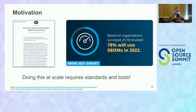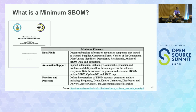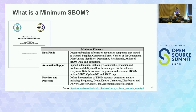The minimum SBOM: NTIA had a timeline and late last summer produced a document discussing the rationale. There were minimum elements, and the goal was to support automation of automatic generation and scaling. It recognized a couple of formats capable of doing the job: SPDX, CycloneDX, and SWID. And then there were some practices and processes including understanding the depth of your dependencies, your known unknowns, how delivery works, access control, and so forth.